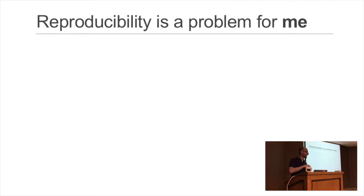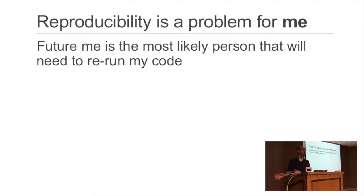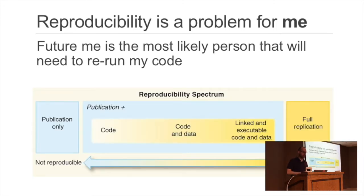These are big-picture ethical issues with the whole field of science that no one person can change. But I quickly learned during my PhD that reproducibility was first and foremost a problem for me, because most people aren't trying to run my code — it's always future me that's stuck trying to rerun my code. So apart from the bigger ethical reasons about scientific research, it really helps you if no one else.